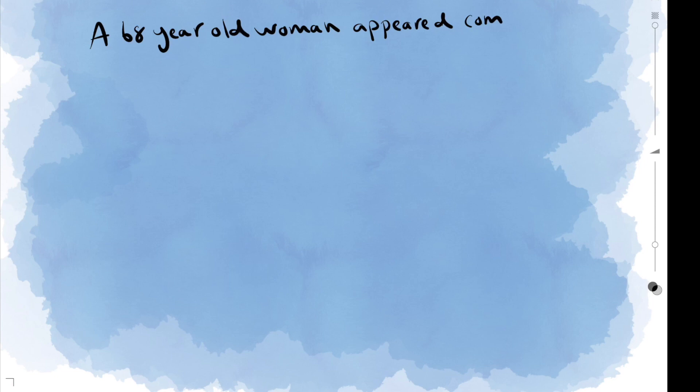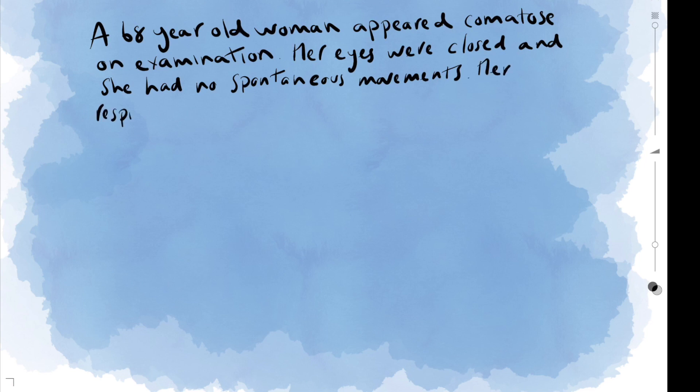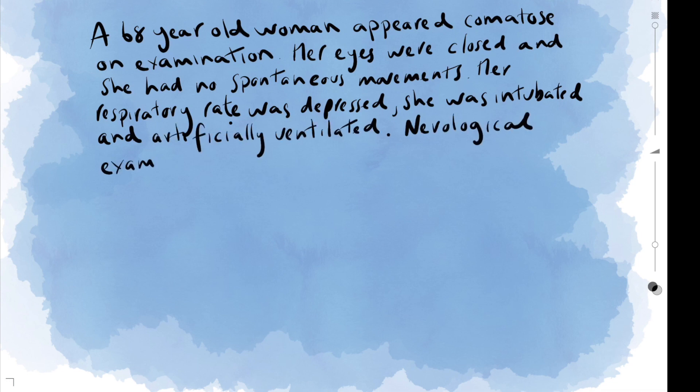We're going to use a case study. We've got a 68-year-old woman who appeared comatose on examination. Her eyes were closed and she had no spontaneous movements. Her respiratory rate was depressed and she was intubated and artificially ventilated.